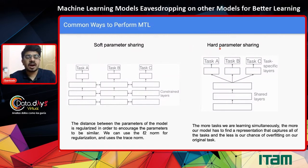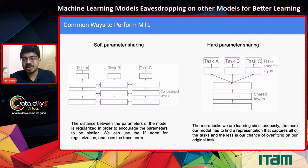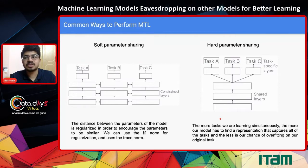Most people in industry use hard parameter sharing over soft parameter sharing, because soft parameter sharing uses a lot of memory. Hard parameter sharing has one common feature extractor where all model learning is present, and the model will have to learn such that it gives the best performance for task A, task B, and task C. As you pass different datasets for each task, the representation is so generalized that each task benefits from the other task's data. This is hard parameter sharing — the shared layer is only one copy in computer memory, shared across different tasks.